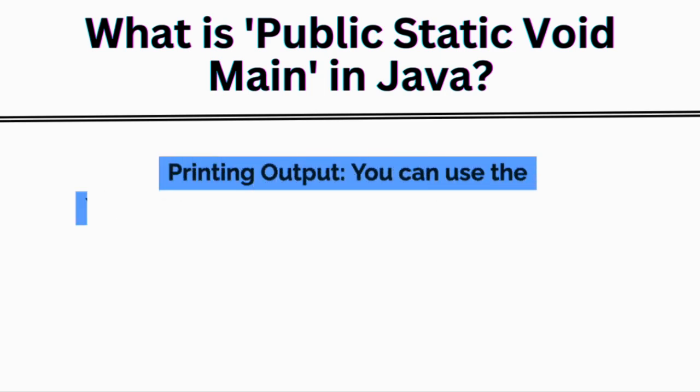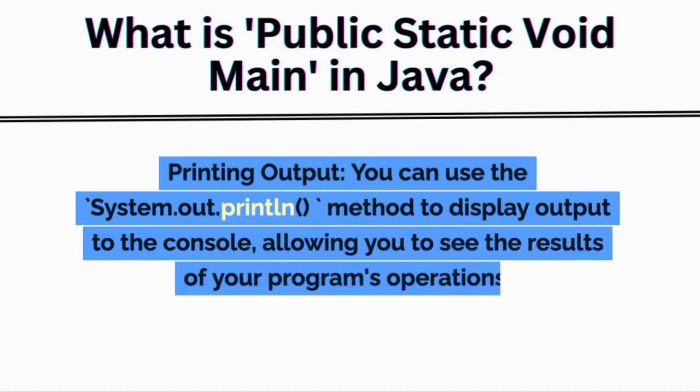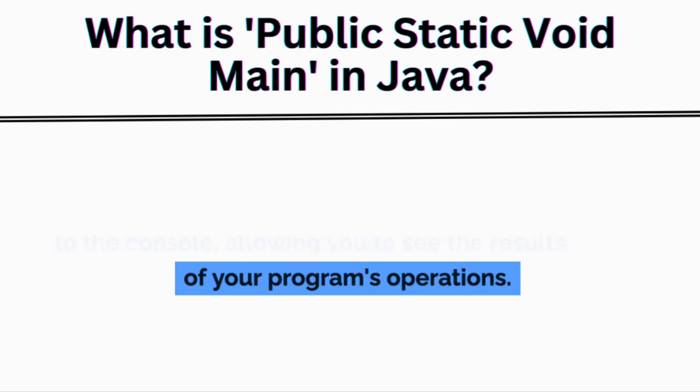Printing output: you can use the system.out.println method to display output to the console, allowing you to see the results of your program's operations.